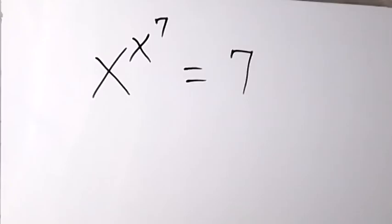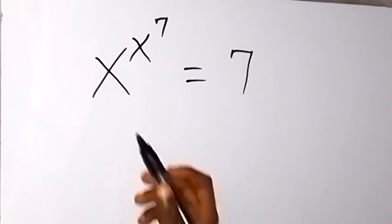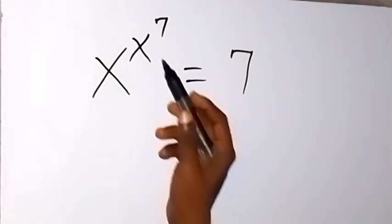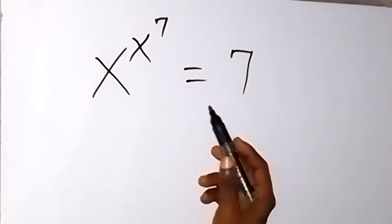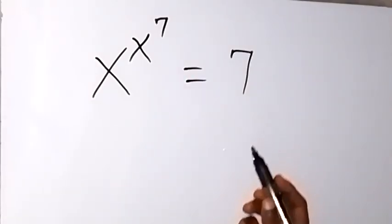Good day. How to solve this problem? x raised to power x, then raised to power 7, equals to 7.